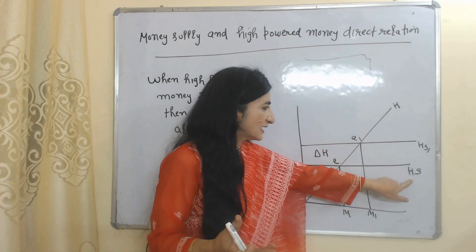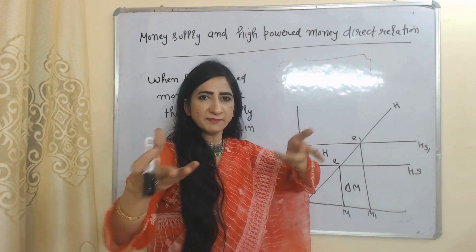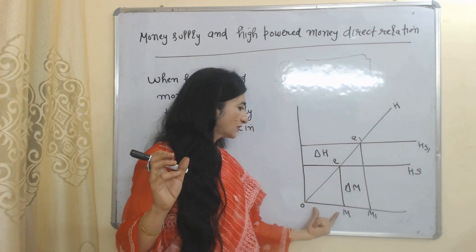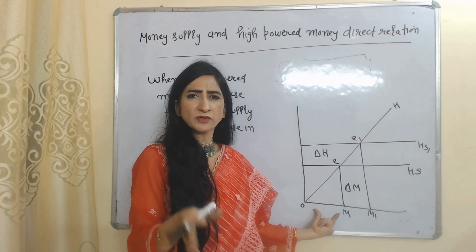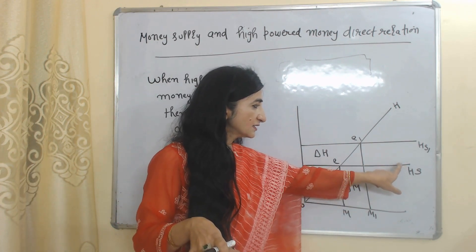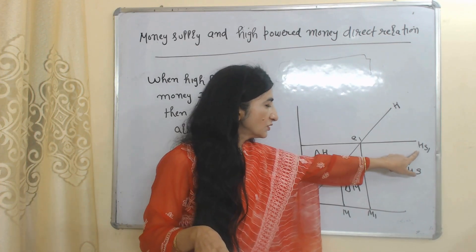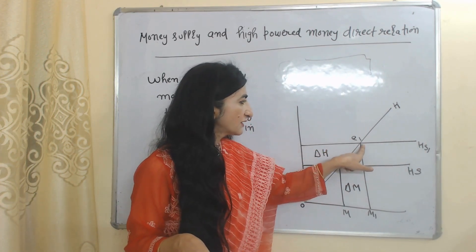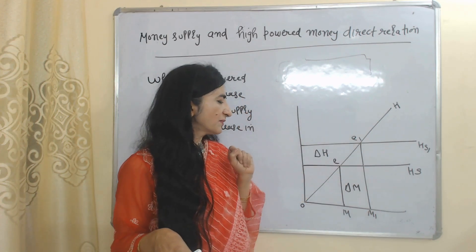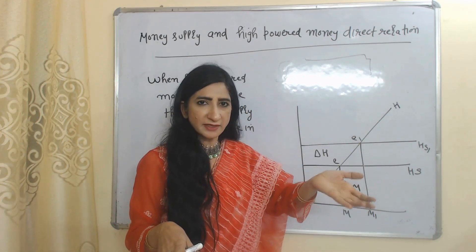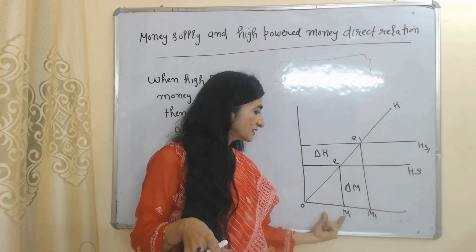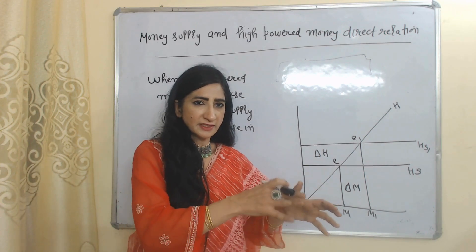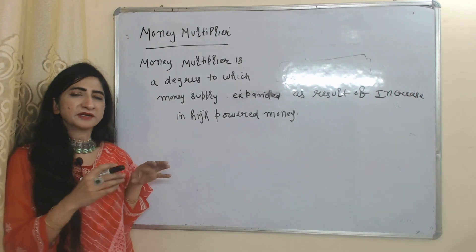Hd shows the demand for high powered money. HS and HS1 show the supply of high powered money. E is our initial equilibrium point, where money supply is OM. Now suppose demand is constant but supply of high powered money increases, giving us a new supply curve HS1 and a new equilibrium point E1. At E1, you can see that as the supply of high powered money increases, money supply also increases from M to M1.